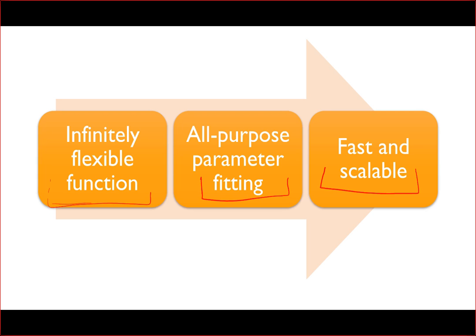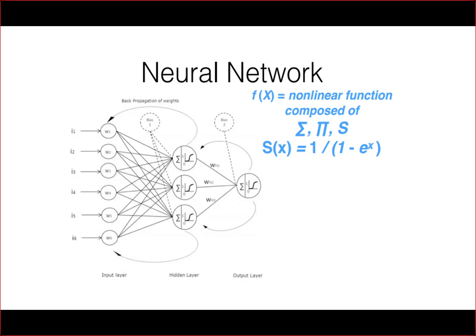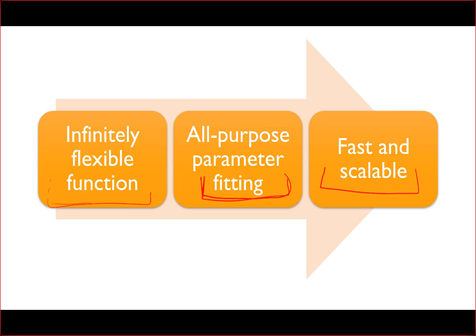The second thing you need is some way to fit the parameters of that function to your particular need. There's a very simple way to do that called gradient descent, and in particular something called backpropagation, which we'll learn about in this lesson and the next. These two pieces together allow us to start with a function capable of doing anything in theory, and turn it into a function capable of doing whatever you want, as long as you have data showing examples of what you want.